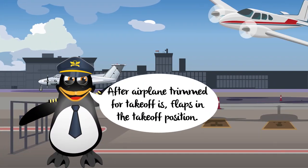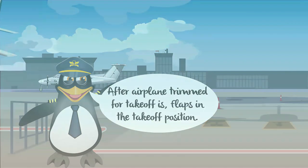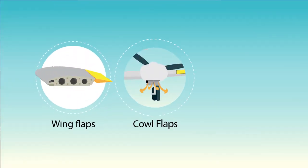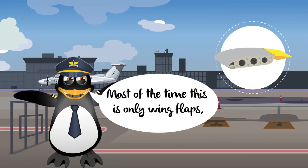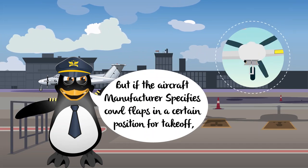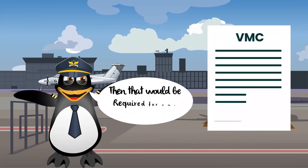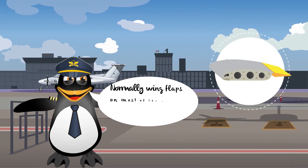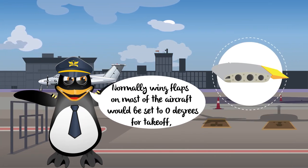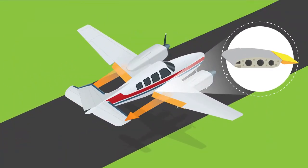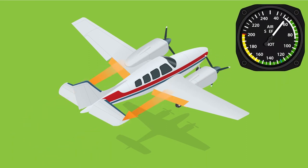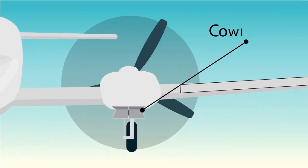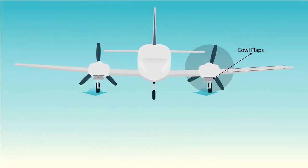After airplane trimmed for takeoff is flaps in the takeoff position. This could be any type of flap — wing flaps, cowl flaps, or even leading edge flaps. Most of the time this is only wing flaps, but if the aircraft manufacturer specifies cowl flaps in a certain position for takeoff, that would be required for VMC certification. Normally wing flaps would be set to zero degrees for takeoff, but if set to the flaps down position, they would add more drag causing a stabilizing effect on the side of the operative engine, which would lower VMC. Cowl flaps open on the operative engine would add more drag due to the added accelerated slipstream, causing less yaw and lower VMC.